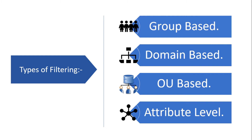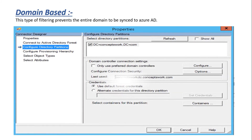Moving on to domain-based filtering configuration: open Azure AD Connect, right-click on your local AD connector, click on Properties, then click on Configure Directory Partition. You can see the domain listed there. In my case it is only one domain, so I'm not getting multiple options, but if you have multiple domains you can simply uncheck a domain from here and that domain will not be synced to the cloud.